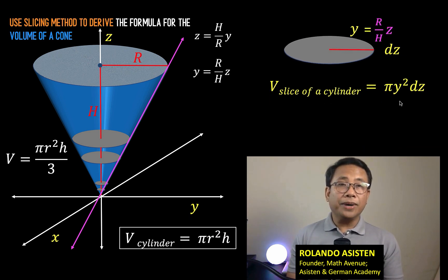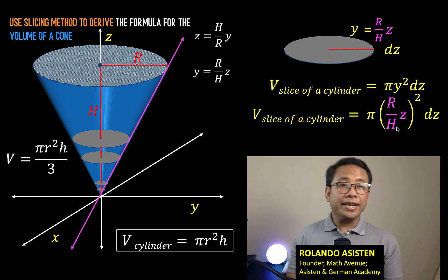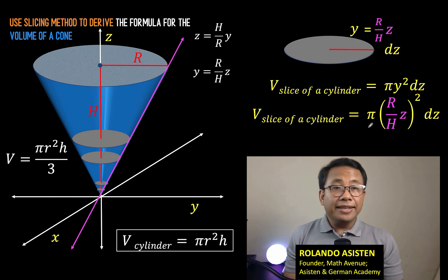So substituting that value to y, we now have this equation. The volume of this circular disk now is π times the radius squared times height, where the radius is R over H times z, then we square it. The height of this thin disk is the infinitesimal dz. Notice that this part of the equation is the area of the circular base, and this dz is the height of this disk. So at this point, what we know is just the volume of one disk. And there are infinitely many disks that we can cut from this cone, and we would like to sum up the volumes of all those disks.